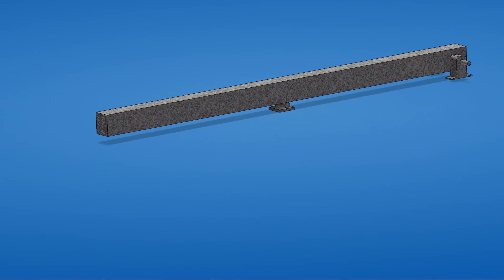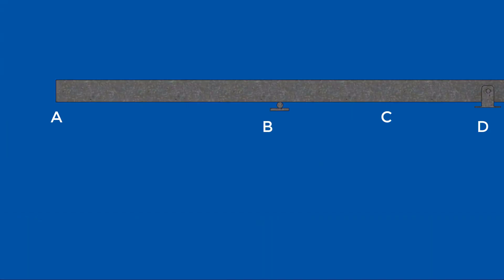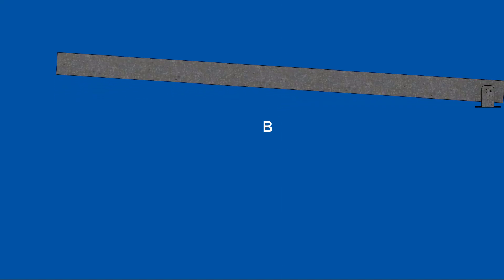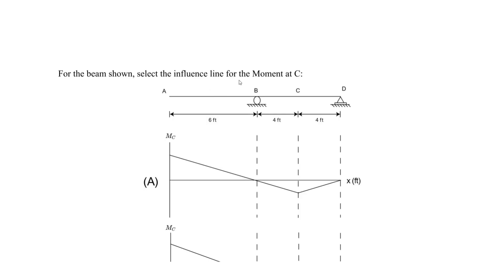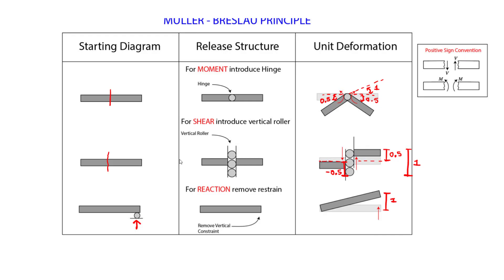To summarize for the same beam: we have a roller at B and a pin at D. We remove the roller, apply the unit deformation, and get a deformed shape with rotation about point D. Now let's draw the influence line for the moment at C. For moments, we look at the starting diagram, release the structure by introducing a hinge at C, then apply a moment causing a unit rotation — 0.5 on each side totaling 1 — following positive sign convention.